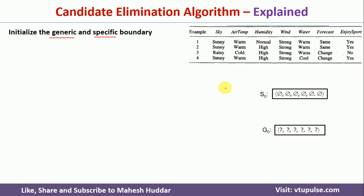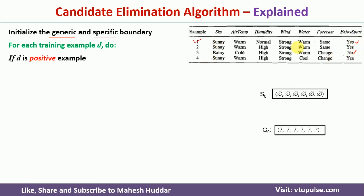Next, we consider one training example at a time. For each training example D, we perform the following steps. When considering an example, there are two possible cases: the example may be positive or negative. If the target is yes, the example is positive; if the target is no, the example is negative.